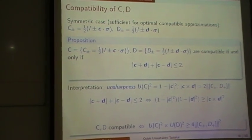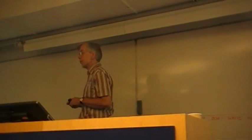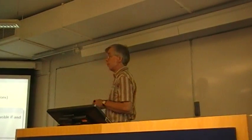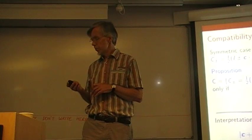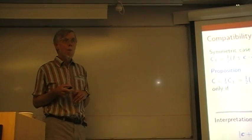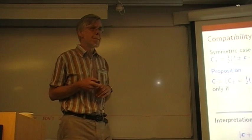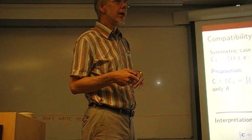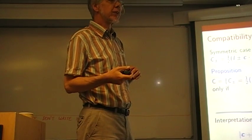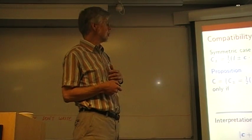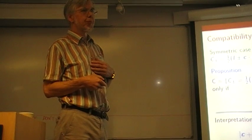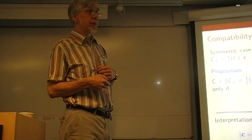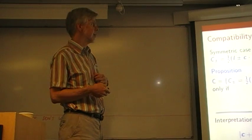Question from audience: 'When you write norm, do you mean operator norm?' — the maximum expectation value or modulus of the expectation value. Since they don't commute, what is the definition of being compatible or joint measurability? Compatibility — joint measurability is the other word — means there is a joint observable for these two. That gives a margin also.